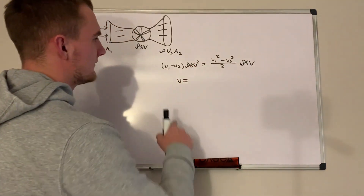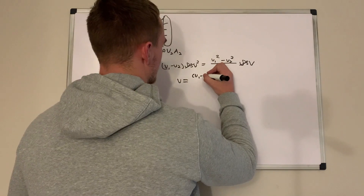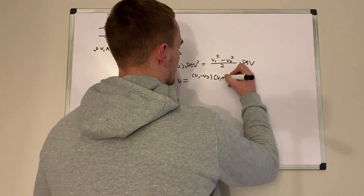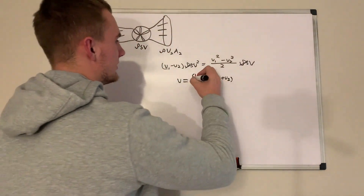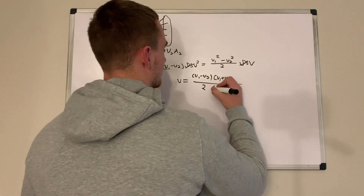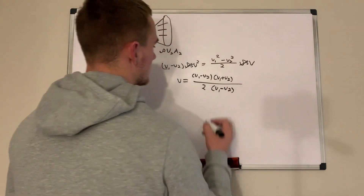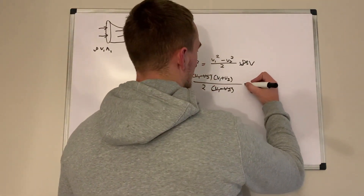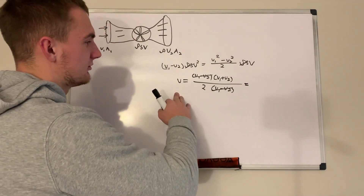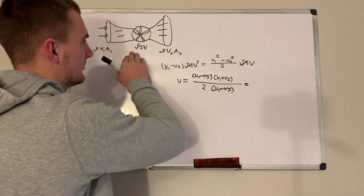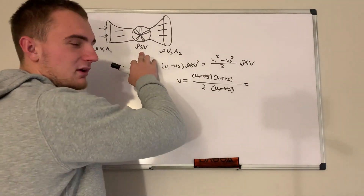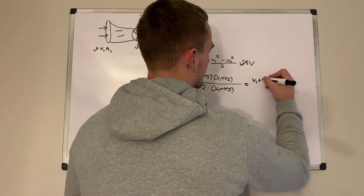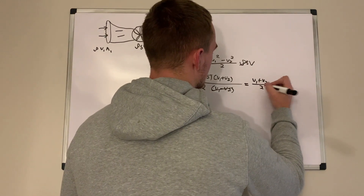After cancellation, we get an expression for the turbine velocity v, which was somewhat vague when we introduced it as rho·S·v with cross-sectional area S. We now find that v = (v1 + v2) / 2. This is the average of the inlet and outlet velocities.